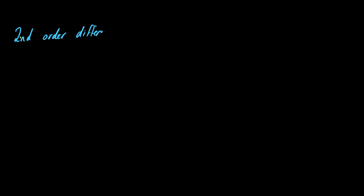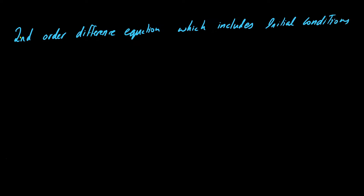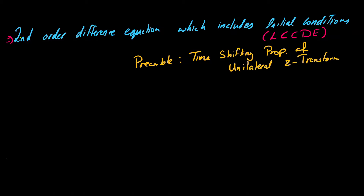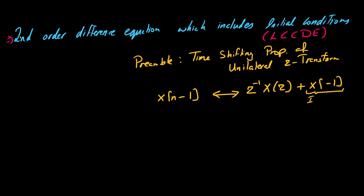In this video we are going to look into a second order difference equation which includes initial conditions. You would often encounter the acronym LCCDE, which stands for linear constant coefficient difference equation, appearing in these sorts of examples. In the preamble, let us look into the time shifting property of the unilateral Z-transform: if we have X of N minus 1, its unilateral Z-transform is Z-inverse times X of Z plus the initial condition X of minus 1. We will be using this property in this example.